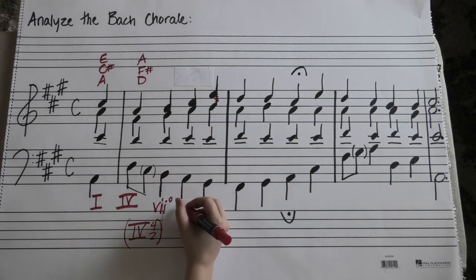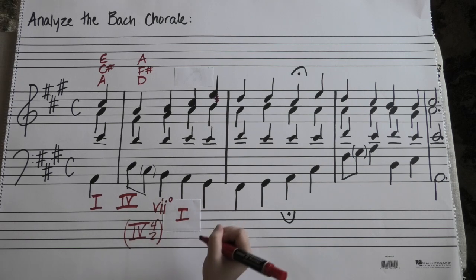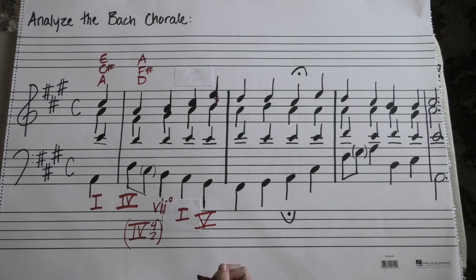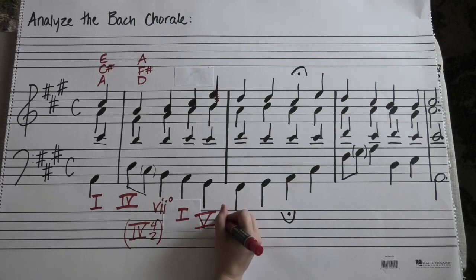From here, we go back to a one chord. From there, we have a five chord, but did you notice, it's a five chord, but the root's not on the bottom. It's a five six. It's an inversion, it's in first inversion.